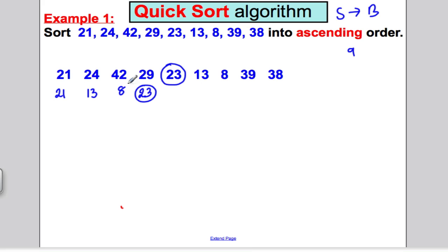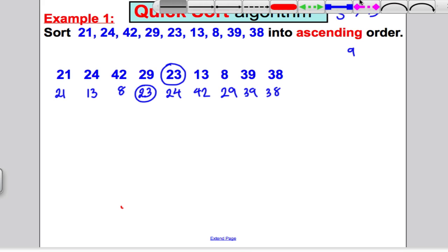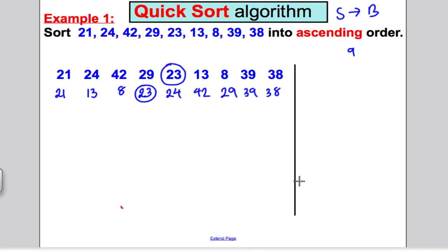Then you write down anything bigger than that as it arose. So 24, 42, 29, 39, and 38. By the way, I'm going to introduce a bit of method for you. In the exam questions, they tell you to clearly state your pivot. We're going to circle them, but at each stage, state what you pivoted. So at this point, I pivoted 23. So call that pivot column. Now I've got a sublist of three and a sublist of five. The middle is going to be 13 here. So the middle of three is the second, and the middle of five is the third. So my pivots here are 13 and 29.